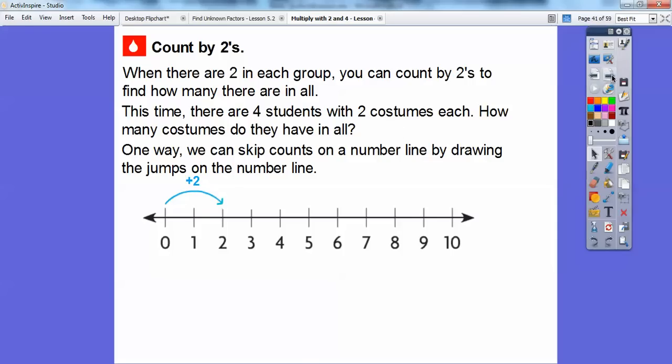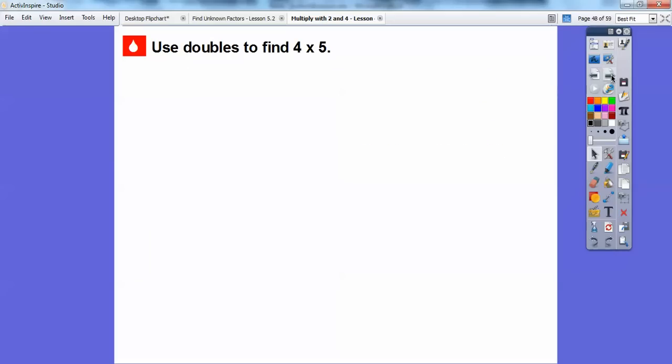So there's 1. So here's another one. There's my second one, plus 2. There's my third one, plus 2. There's my fourth one, plus 2. So if you add 2 four times, you're going to get to 8 right there. So the 4 students are going to have 8 costumes in all. So that's another way, just by counting on the number line.